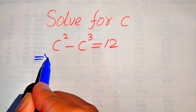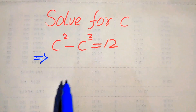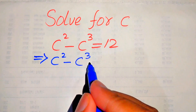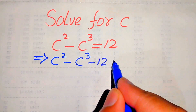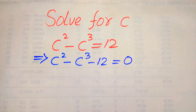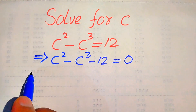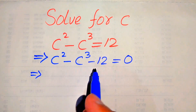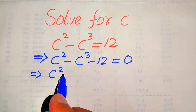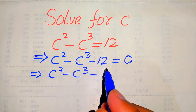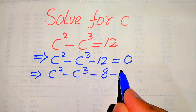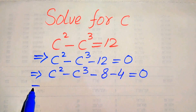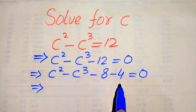First, we rewrite the equation by moving 12 to the left-hand side: c squared minus c cubed plus 12 becomes c squared minus c cubed minus 12 equals 0. In the next step, we break 12 as minus 8 minus 4, so we write c squared minus c cubed minus 8 minus 4 equals 0.